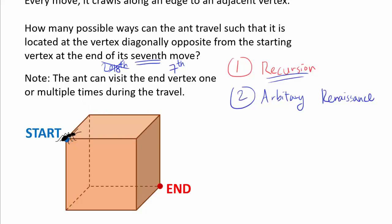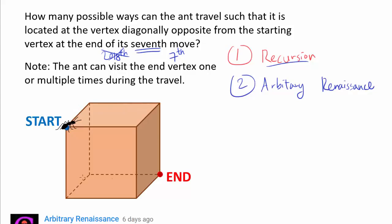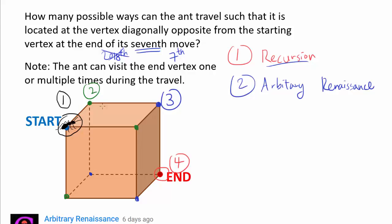Now let's set up the recursion. There are 4 different groups of vertices in this cube. The first group contains the start vertex. The second group contains the three vertices that are 1 move away from the start. The third group contains the three vertices that require 2 moves to reach from the start. And the fourth group is just the end vertex — the one diagonally opposite. I'm grouping them based on their symmetry so the recursion works out nicely.